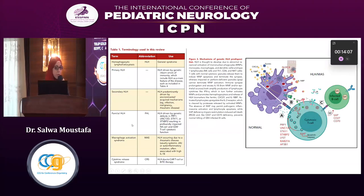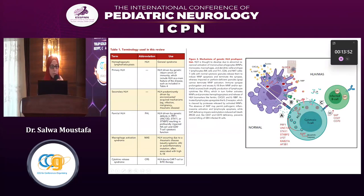There are five definitions for syndromes of hypercytokinemia: primary HLH, secondary HLH, familial HLH, macrophage activation syndrome, and cytokine release syndrome. They differ in inciting etiology but share similar pathogenesis — excessive activation of lymphocytes and macrophages in a vicious circle of resistant antigenemia, leading to excessive production of cytokines and widespread inflammatory manifestations.